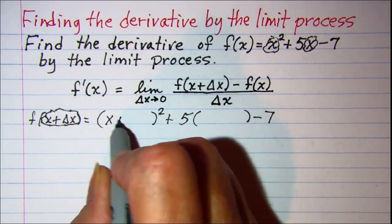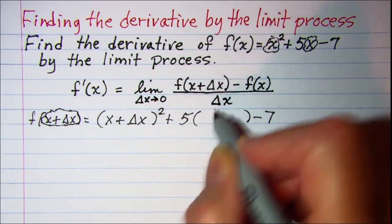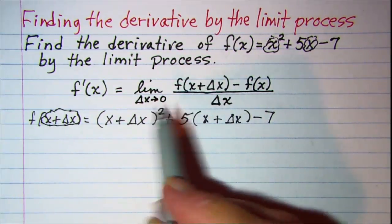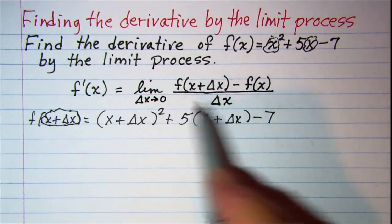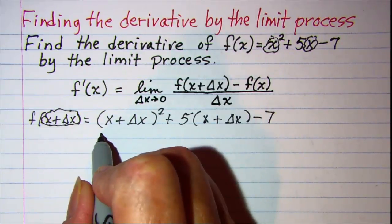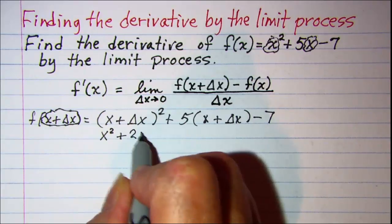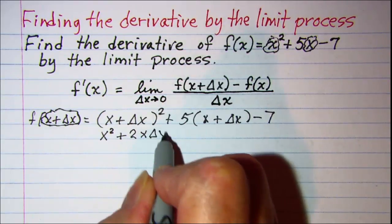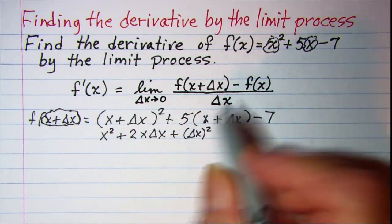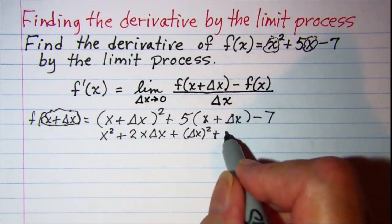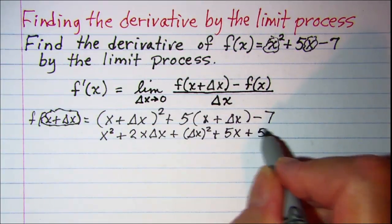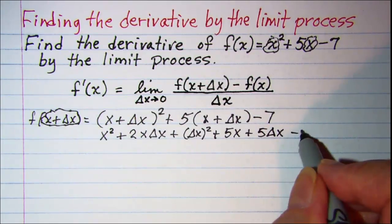So this is x plus delta x squared, plus 5 times x plus delta x, minus 7. When we square x plus delta x we get x squared plus 2x delta x plus delta x squared. Then we distribute the 5 to get plus 5x plus 5 delta x, minus 7.